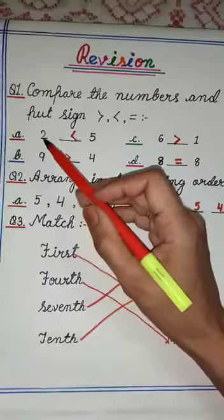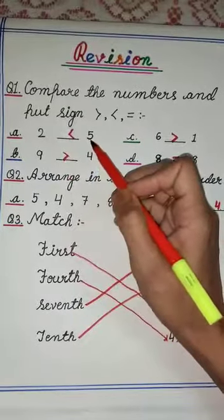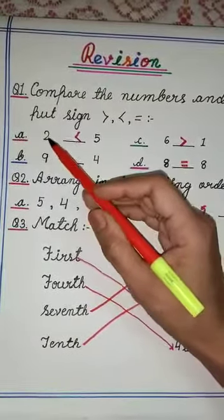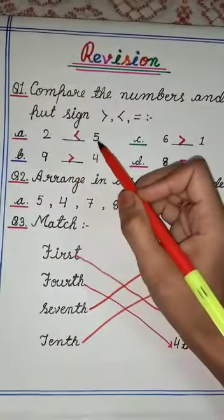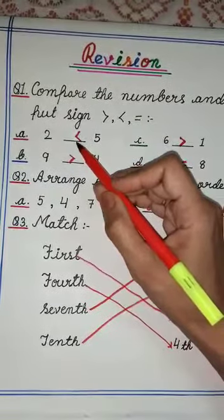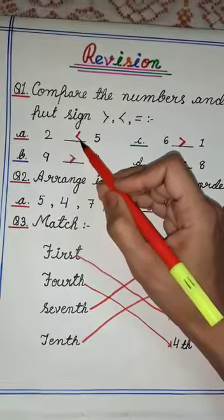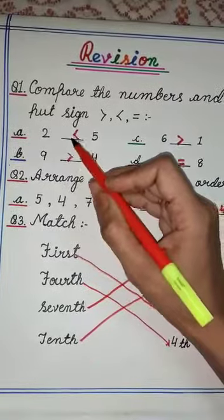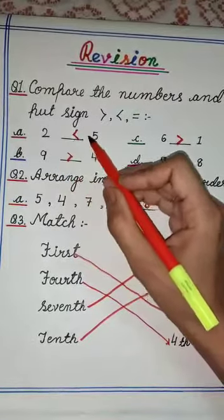So here we have numbers 2 and number 5. We know children that 2 is smaller than 5. So here we will put this sign which shows the smaller than. 2 is smaller than 5.